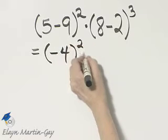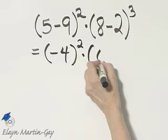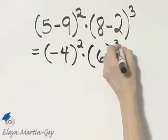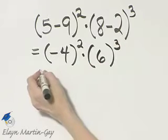That is to be squared, times 8 minus 2 is 6, and that is to be cubed. Let's continue.